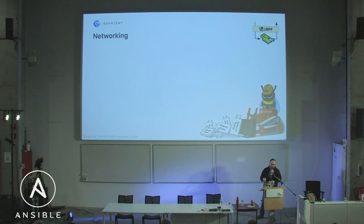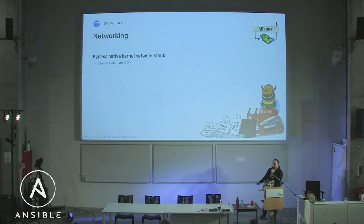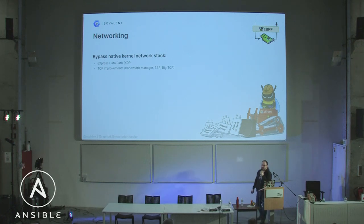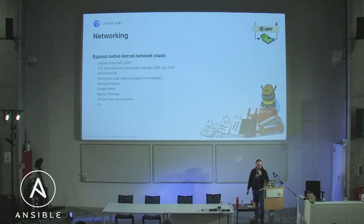When it comes to networking there's a lot of gain as well. eBPF allows us to bypass native kernel network stacks. XDP — express data path — allows bypassing some parts of the kernel, for example dropping packets entirely for DDoS protection. You can improve TCP processing before it lands in the kernel, add NAT64 and NAT46 for IPv6, implement performance load balancing algorithms directly in the kernel without native kernel support, add network policy support for Kubernetes, cluster mesh, egress gateway, and sidecar-free service mesh.